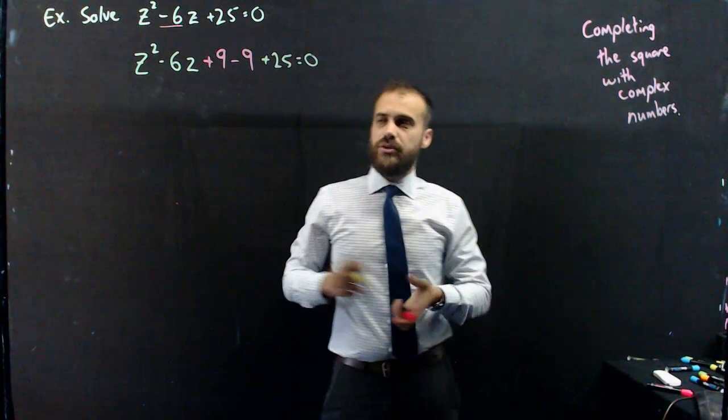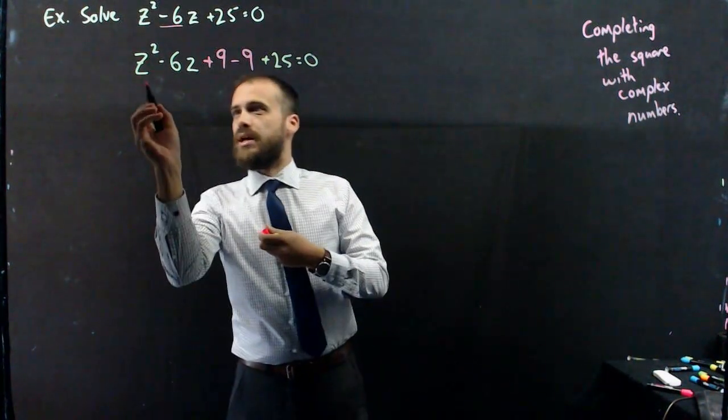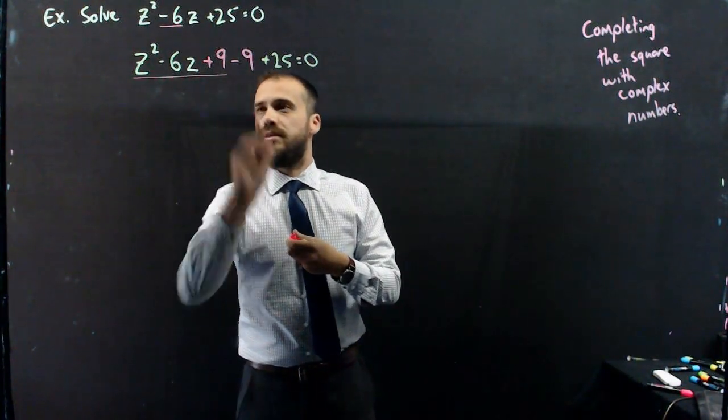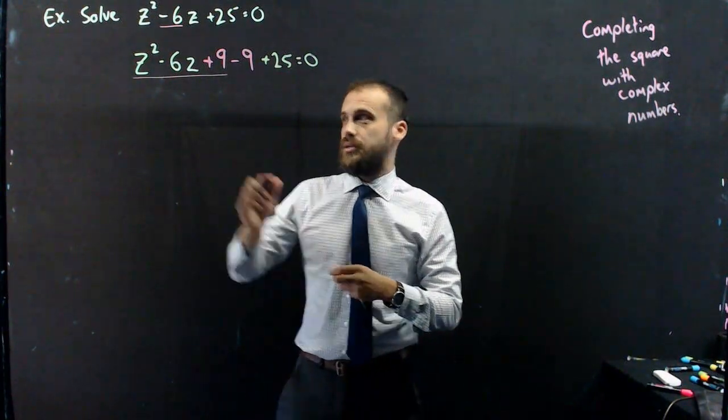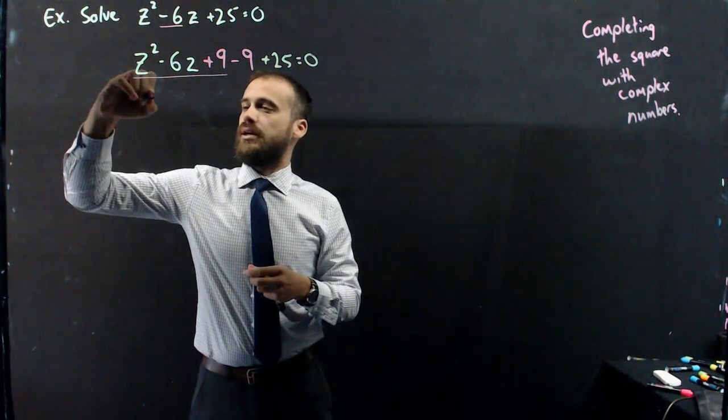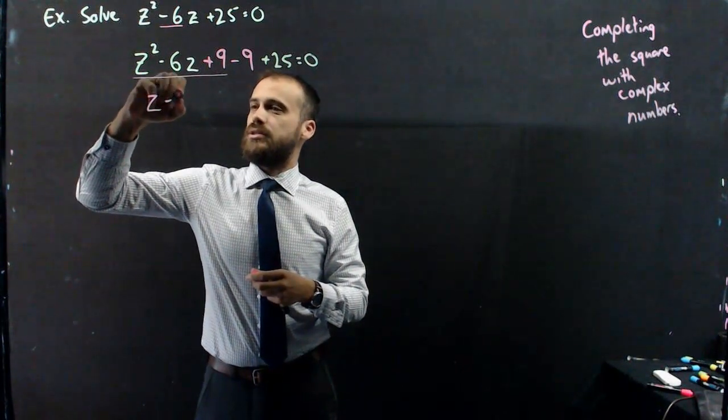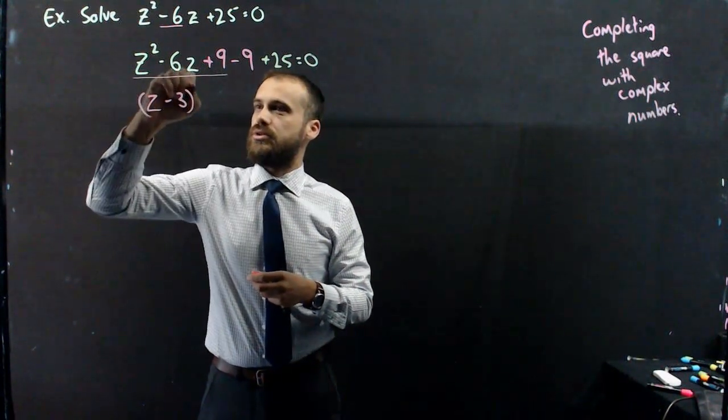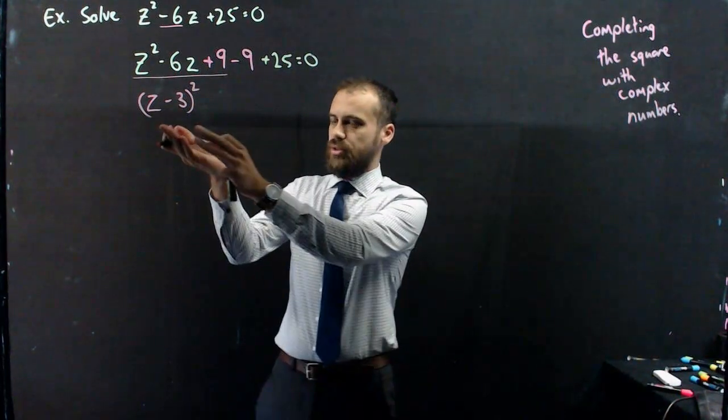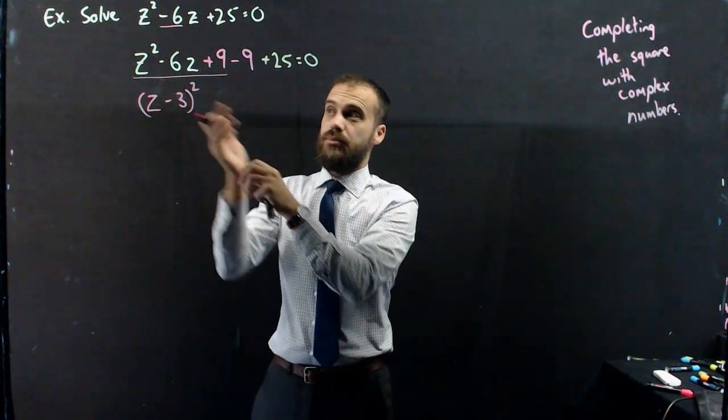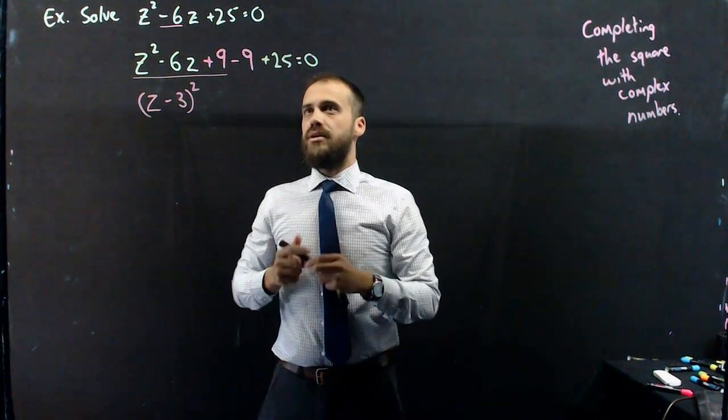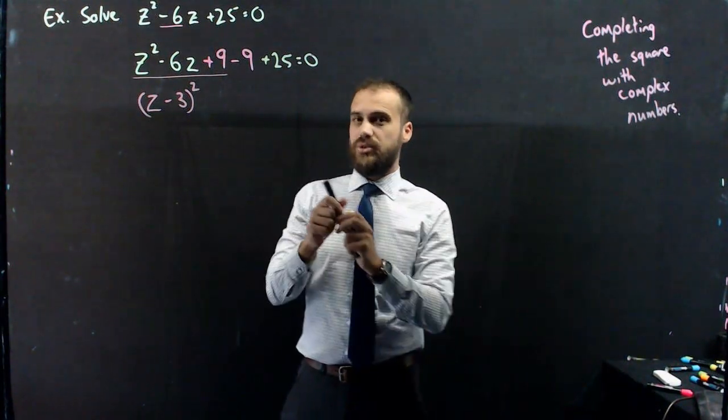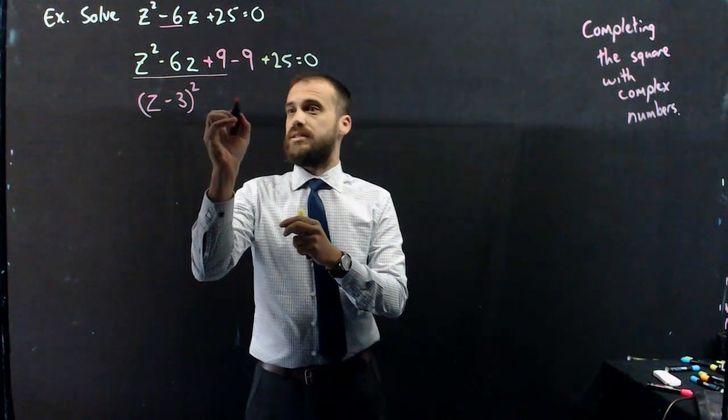Now, why on earth would we do this? Well, because that now creates this scenario, and that is a perfect square. So now we can say that z minus 3 squared. You can test that. You can expand that, and you'll get z squared minus 6z plus 9. And then this section here, minus 9 plus 25 makes 16.